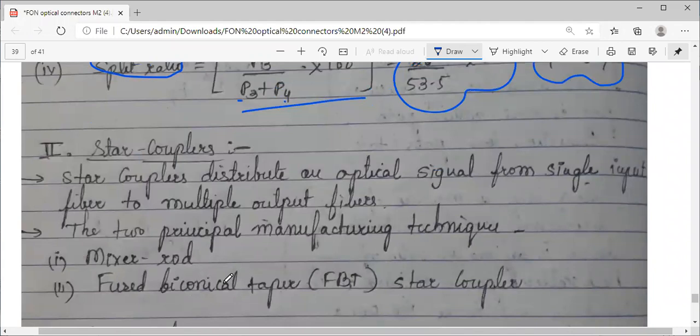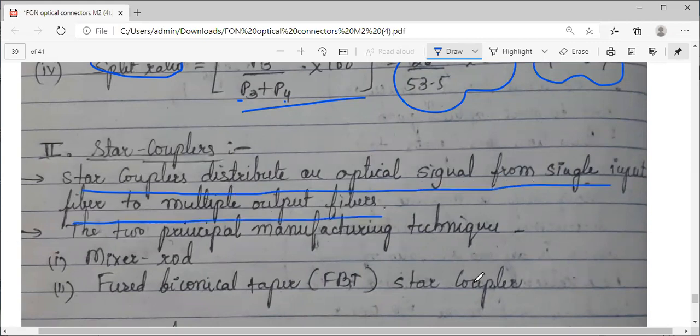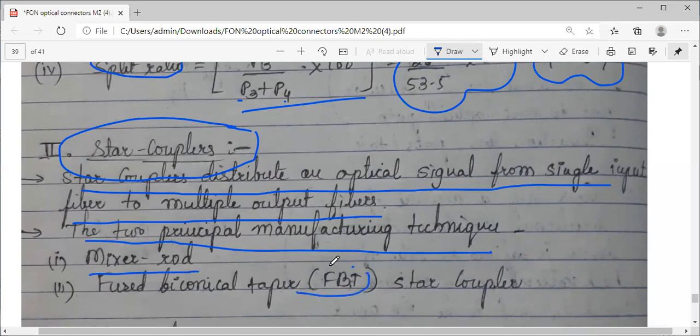Now coming to the second type of couplers: star couplers. Star couplers distribute the optical signals from one input fiber to multiple output fibers. Many fibers are connected; if you give input to one fiber, it will be distributed among many branch fibers. There are two principal manufacturing techniques: mixer rod and FBT.